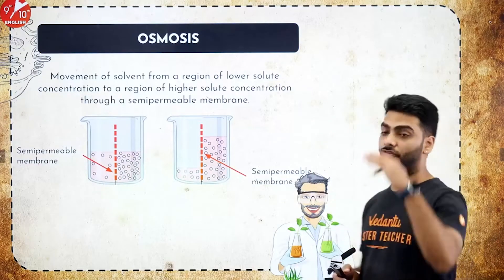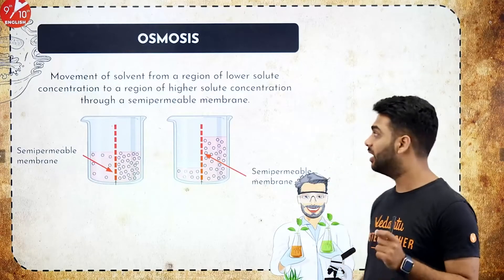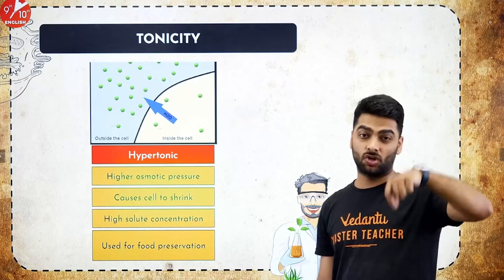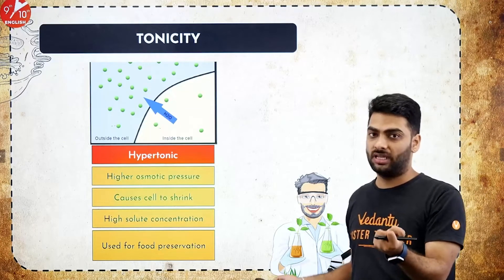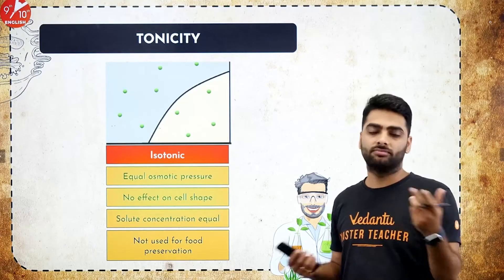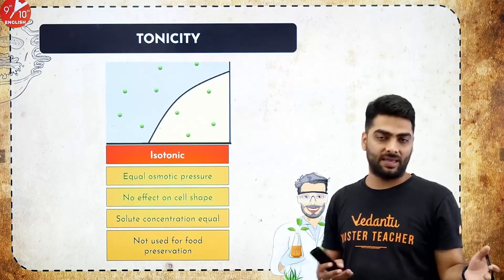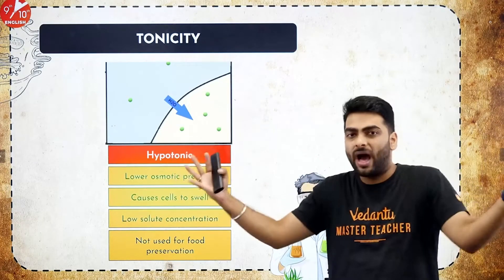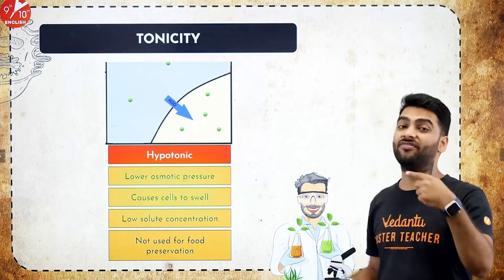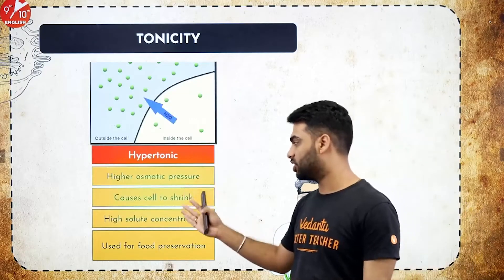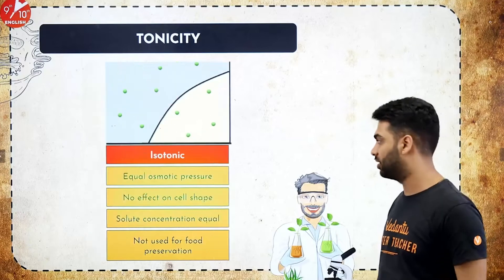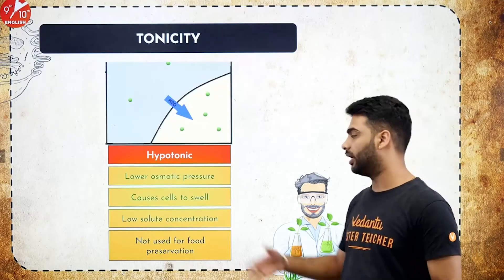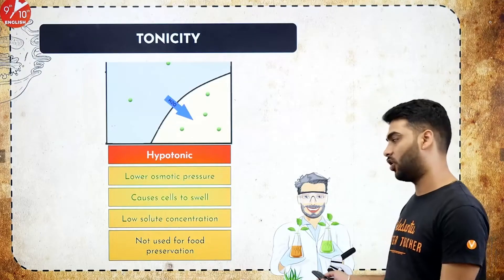Osmosis is the movement of solvent from a region of lower concentration to higher concentration across a semi-permeable membrane. A hypertonic solution shrinks the cell — if you put raisins (kishmish) in a salt solution, they will shrink. If you put raisins in sugar solution, nothing happens because the concentration inside and outside is equal — that is isotonic. If you put raisins in water, they swell — that is hypotonic. Hypertonic means higher osmotic pressure, cell shrinks, and is used for food preservation. Isotonic means equal pressure, no effect on shape. Hypotonic means lower osmotic pressure, the cell swells, and is not used for food preservation.